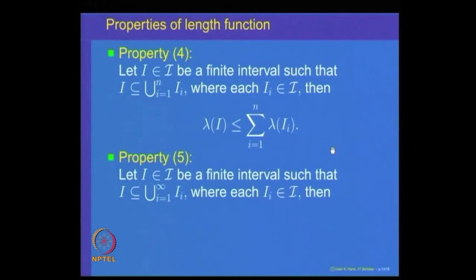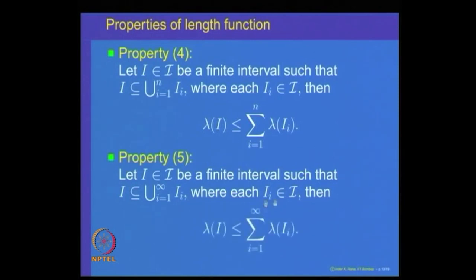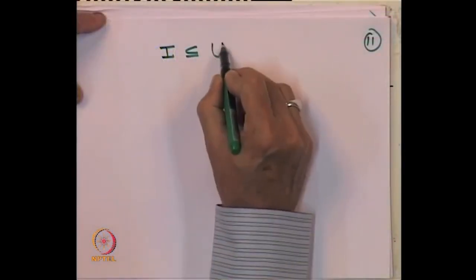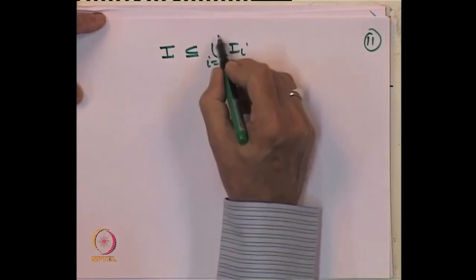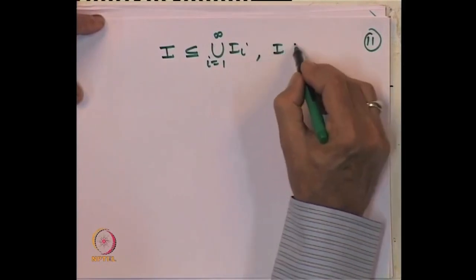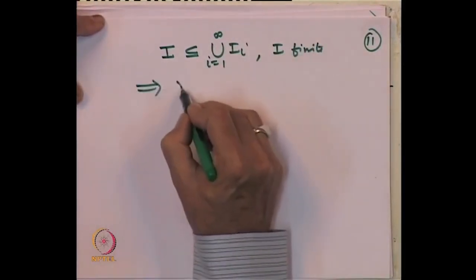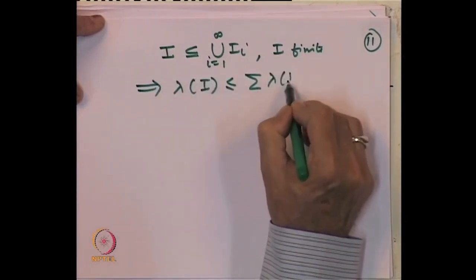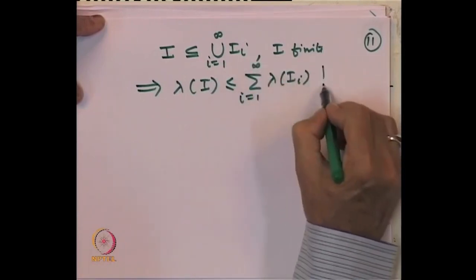We extend this to countable coverings. If i is a finite interval contained in a countable union of intervals i₁, i₂, i₃, ..., then the claim is lambda(i) ≤ summation lambda(iⱼ) from j=1 to infinity. If any iⱼ is infinite, one term in the sum is +∞ and we are done. So assume all intervals, including i, are finite.